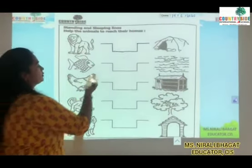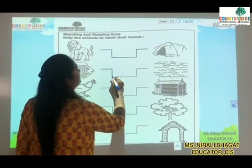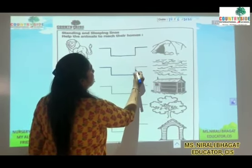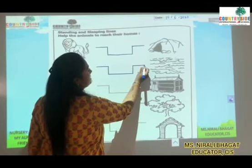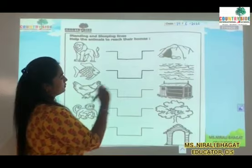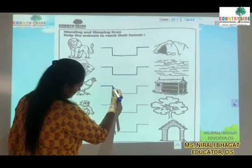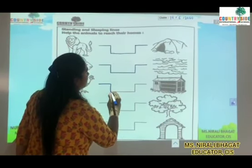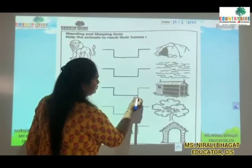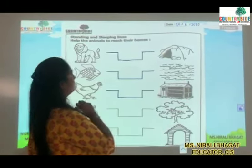Now fish — sleeping line, then standing line, then going along, then sleeping line again, then standing line and sleeping line. It's done. Now hen — we will help hen reach its home. Sleeping line, then standing line, then sleeping line. I hope you all are doing along with me. Joining the dots, again standing line, going along and reach to its home.